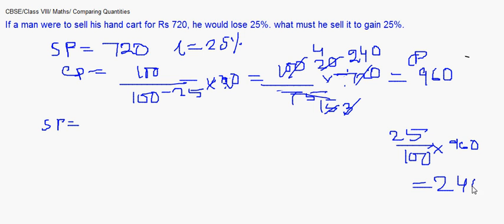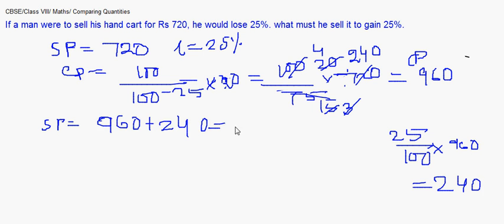So the selling price is 960 plus 240, which gives rupees 1200. That is the selling price required to gain 25%. This was a simple question; let's move on to another one.